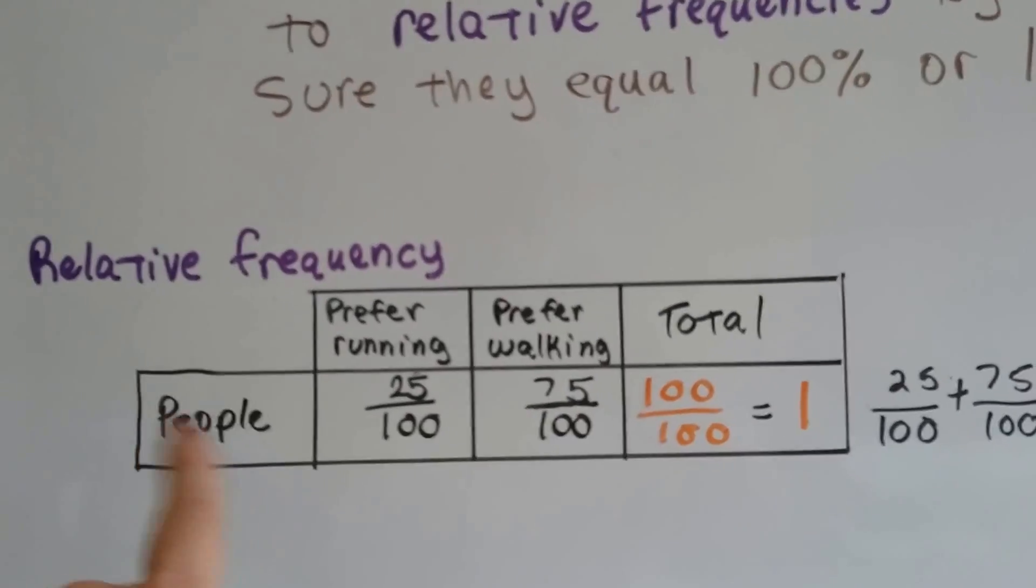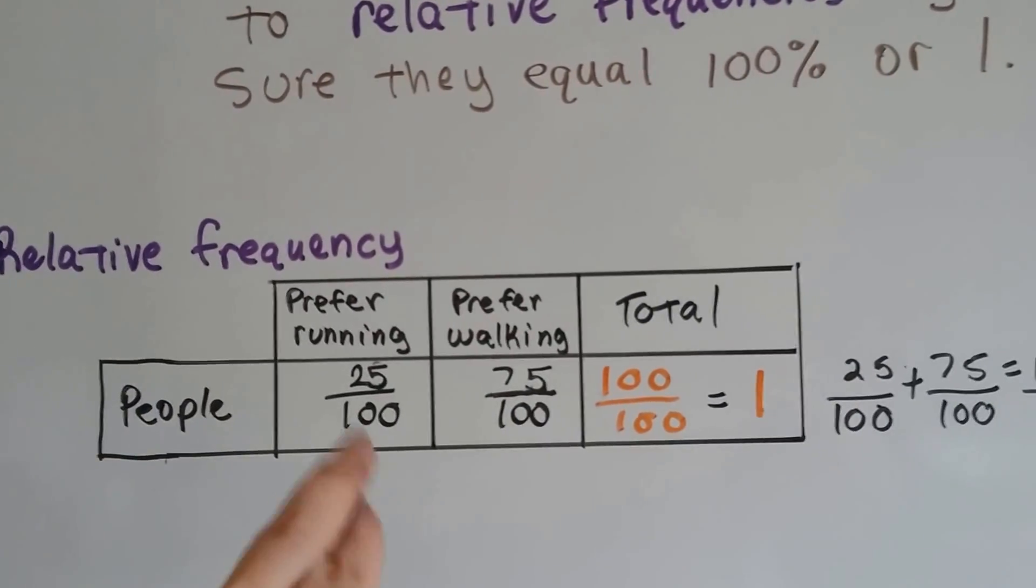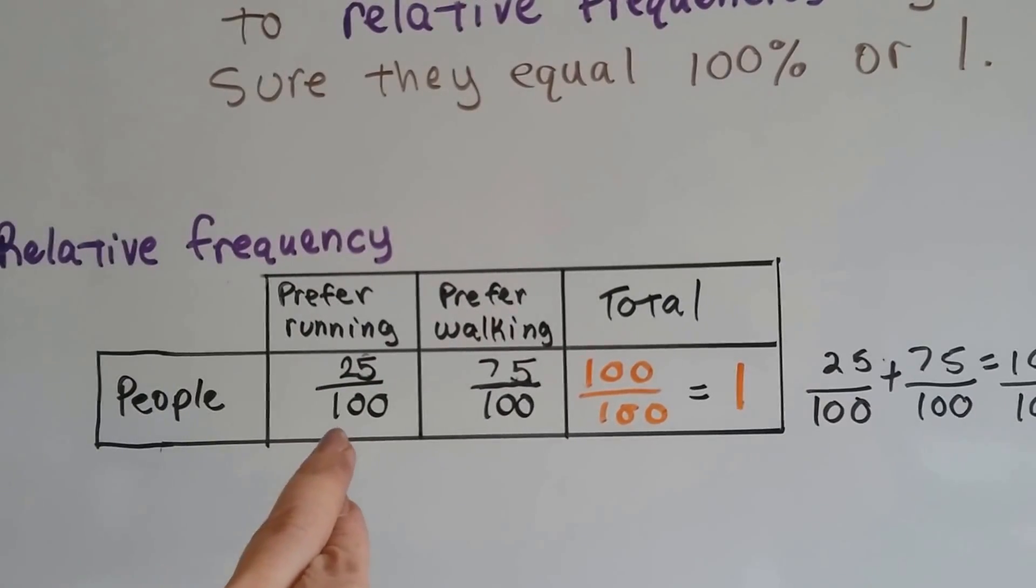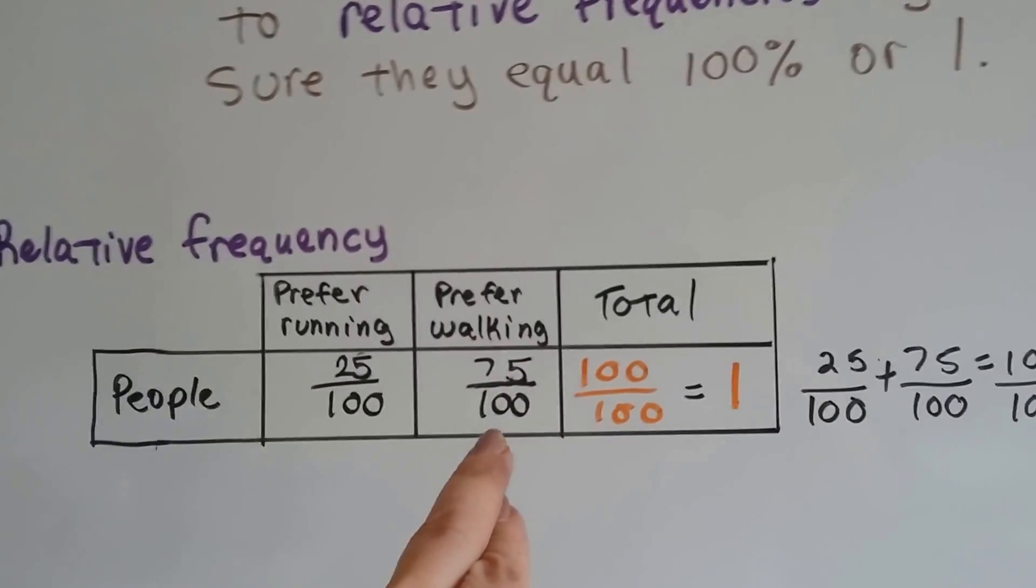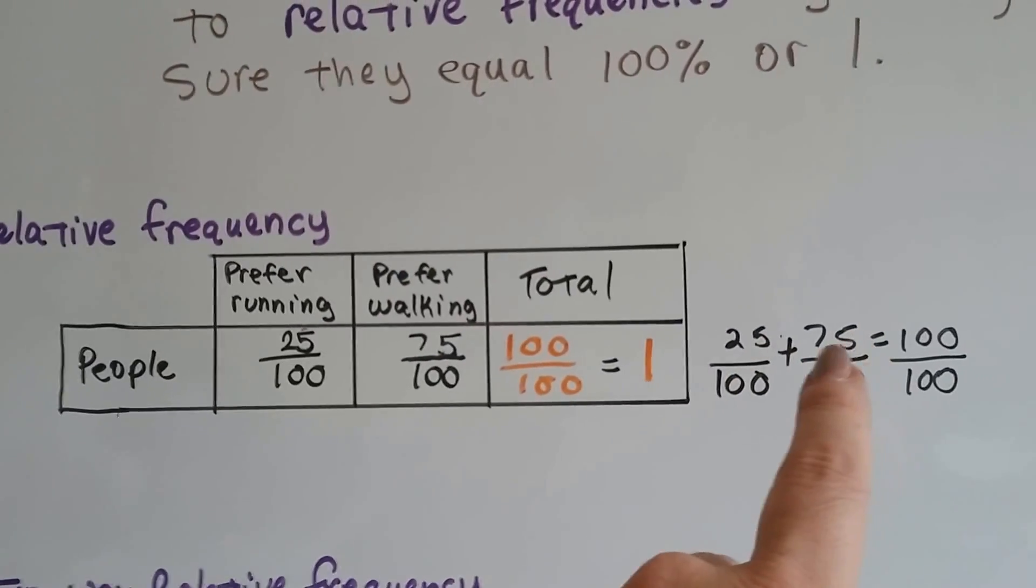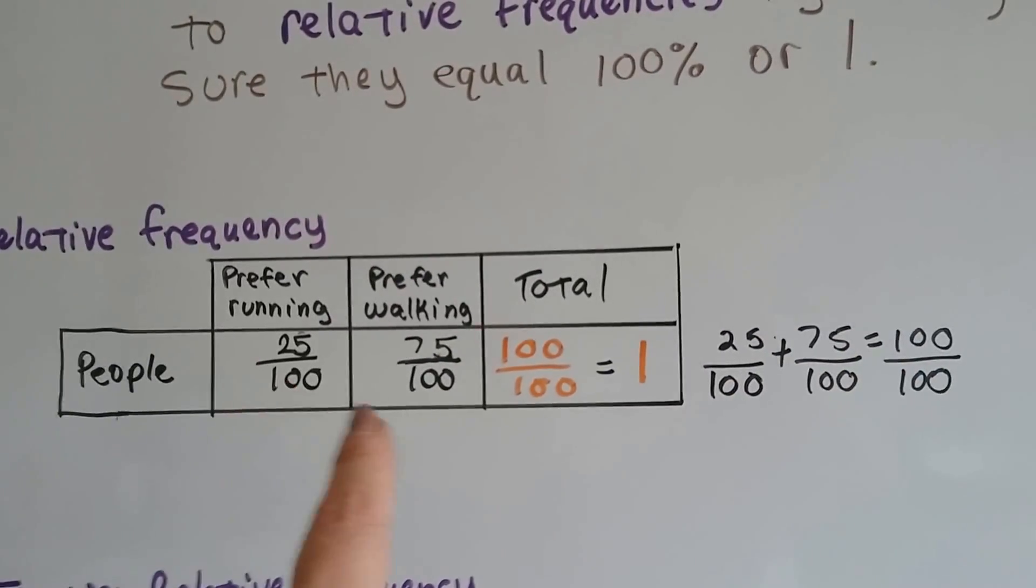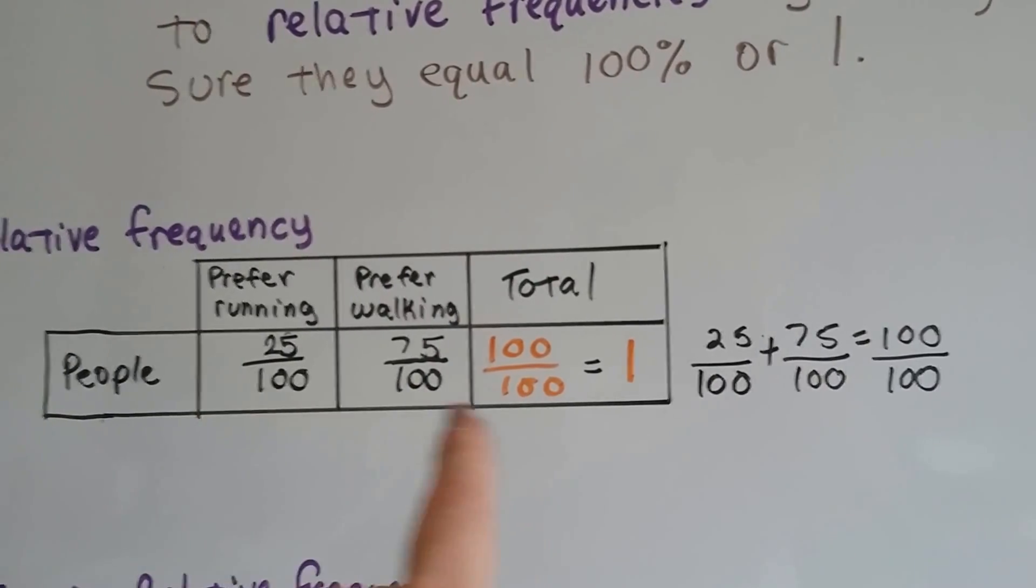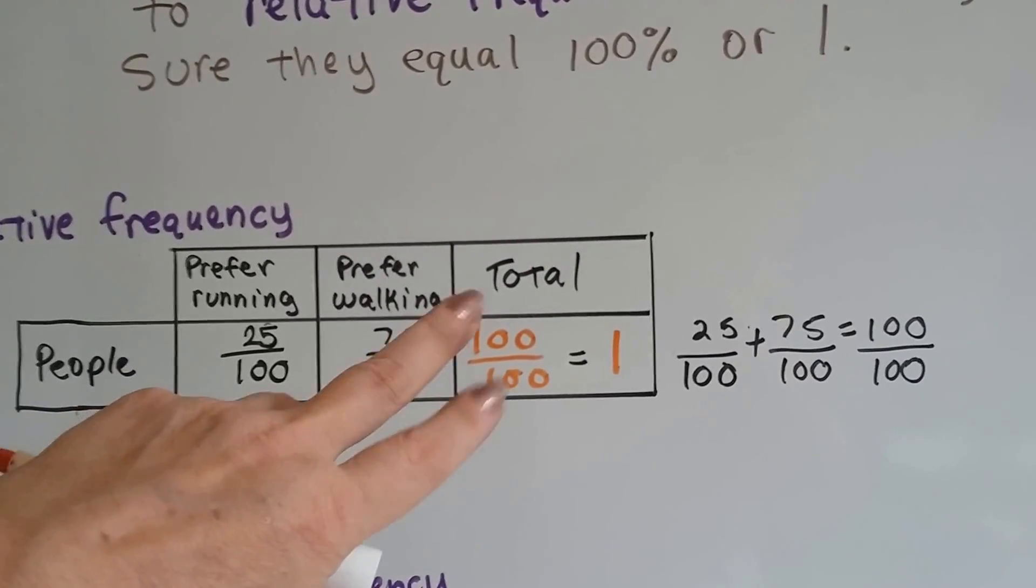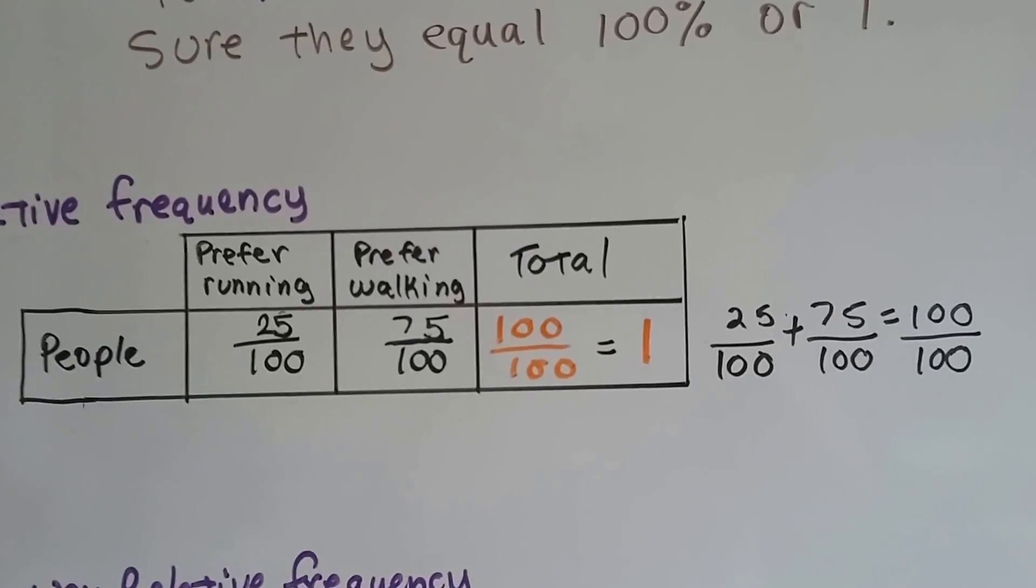So for relative frequency, we've got just a group of people and 25 out of 100 prefer running for exercise and 75 out of 100 prefer walking for exercise. You can see that 25 plus 75 equals 100 and the 100 denominator just slides across. 100 over 100, when the numerator and denominator are the same, makes 1.